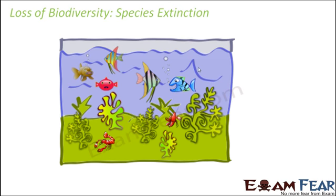We will now talk about species extinction and the loss of biodiversity. Let us take an example of an aquarium — a glass box structure where you have an entire aquatic environment with different types of fishes. Now what will happen if we start taking out the fishes one by one? Inside the aquarium you have a fixed number of fishes, and if you take out one fish each day, after a couple of days the aquarium will be empty with no fish left.